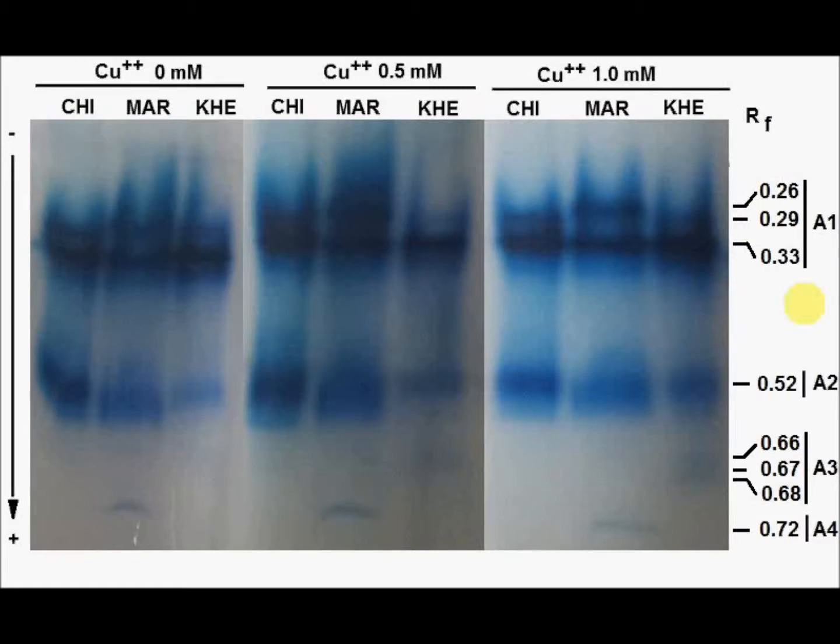Contrary to ascorbic acid, when copper is added in the revelation solution at different concentrations like 0.5 millimolar and 1 millimolar, fast new isoperoxidases appeared on the polyacrylamide gel.